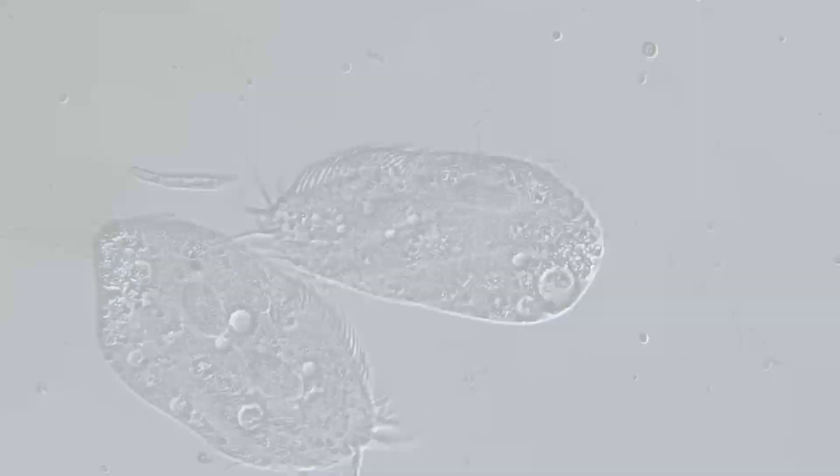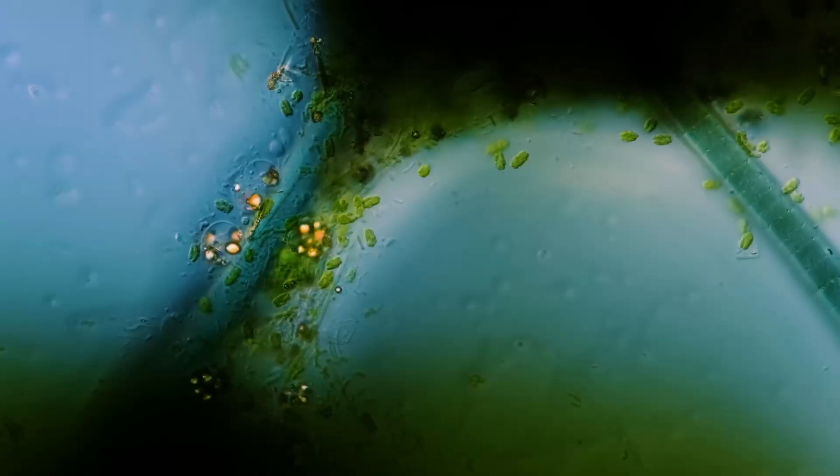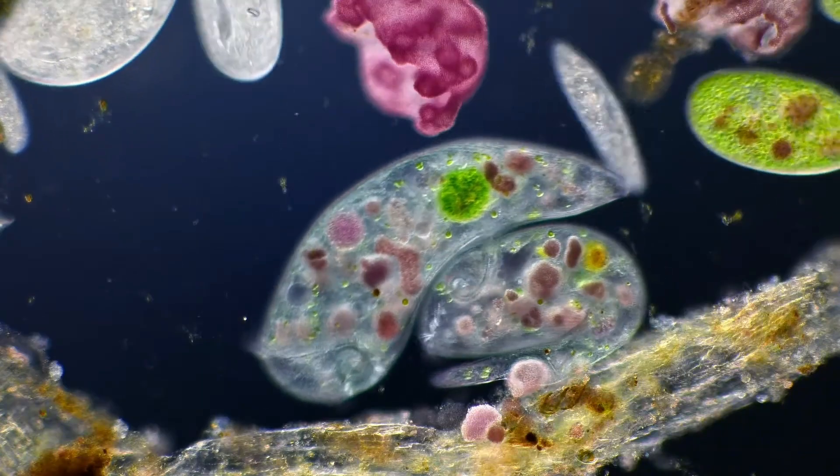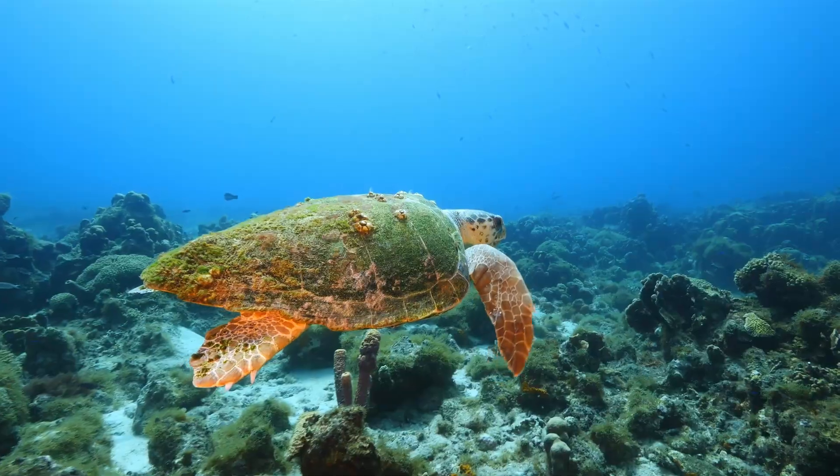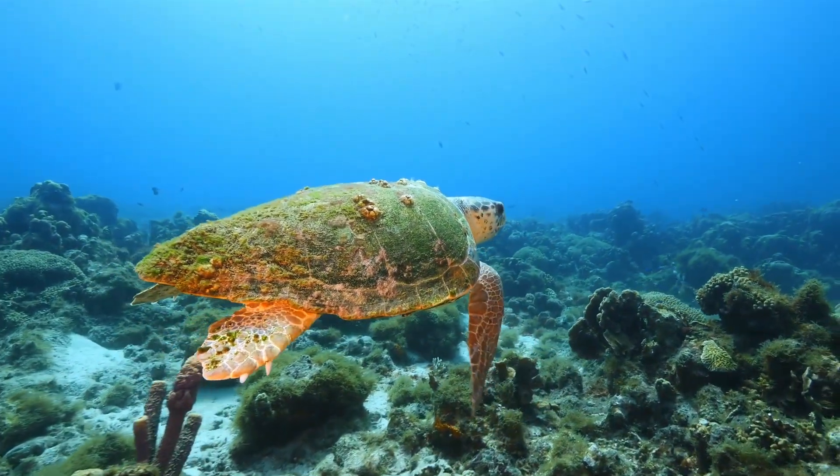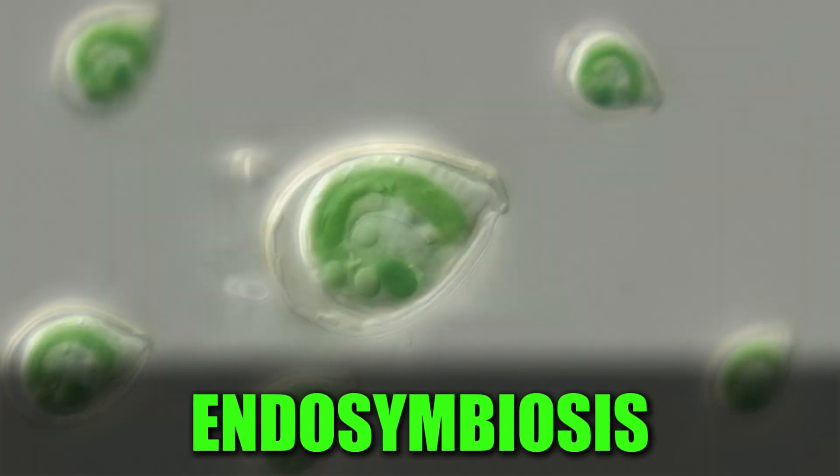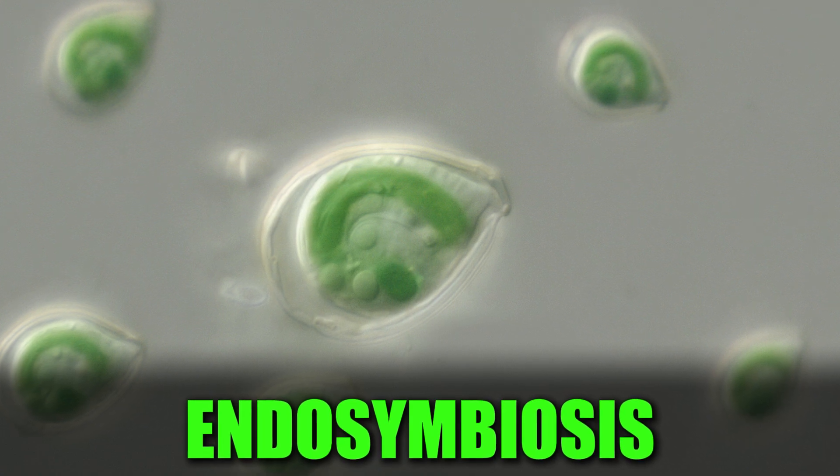And around 2 billion years ago, they pulled off one of the greatest survival tricks in Earth's history. One of these bacteria slipped inside a larger cell. Instead of attacking and destroying, it stayed within, peacefully. This process is called endosymbiosis, living inside together.